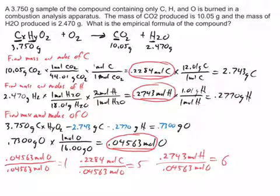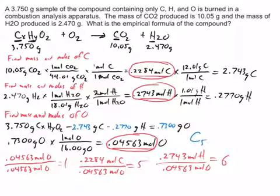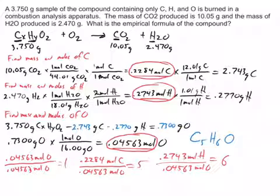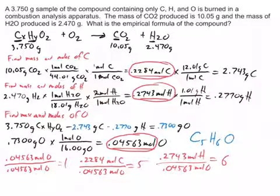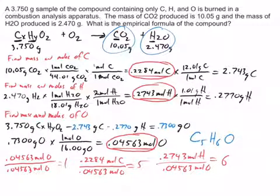So our formula — carbon always goes first — is C5H6O. We don't need to show the 1 for oxygen. That is the empirical formula, and we got all that information from the amount of CO2 and H2O produced during a combustion reaction.